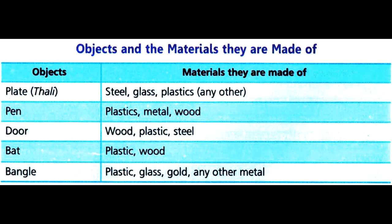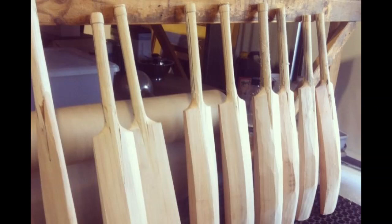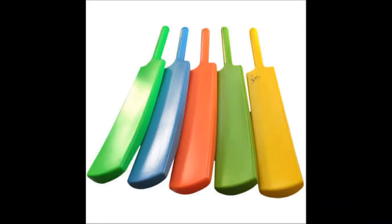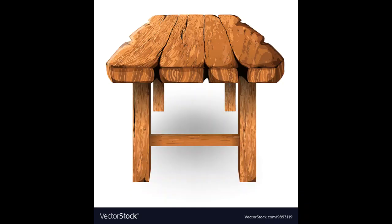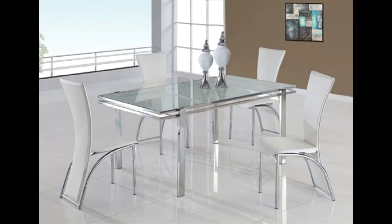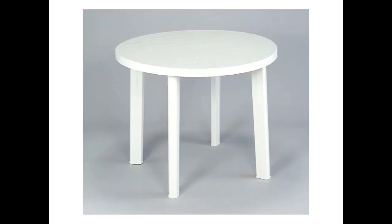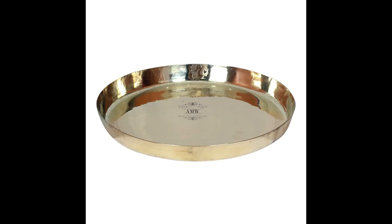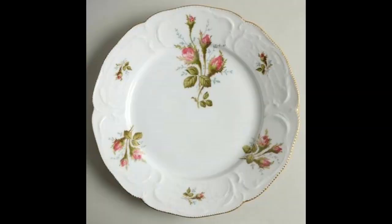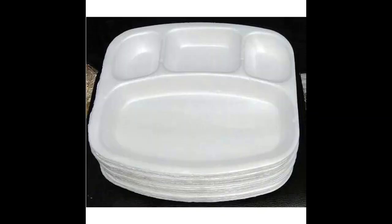The same object can also be made from different materials. A container can be of plastic, metal, or wood. An ornament can be plastic bangles, glass, gold, or any other metal. Bats for adults are made of wood, but bats for children are made of plastic. A table can be made of wood, glass, or plastic. Plates can be made of metal, china, plastic, thermocol, or even plant leaves.